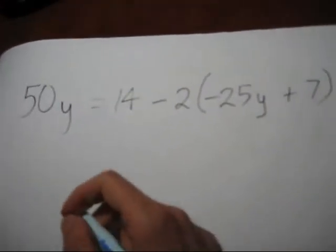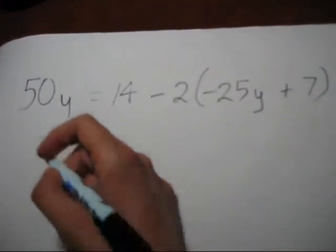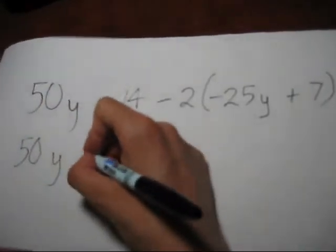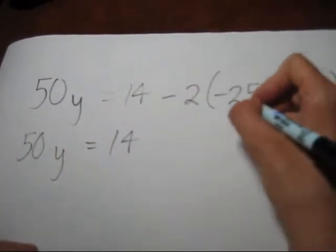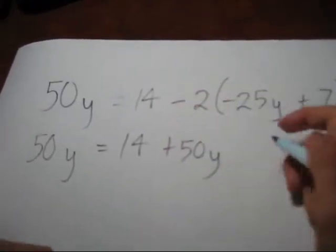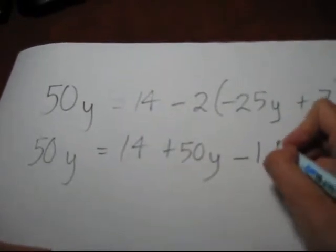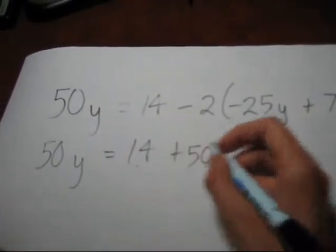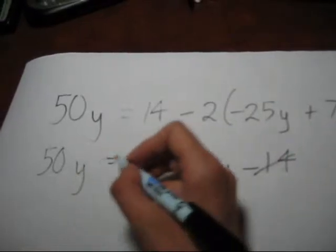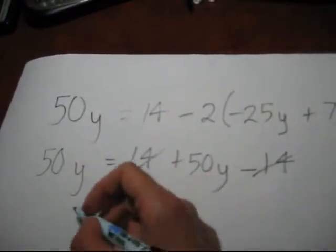Okay, so let's distribute, combine like terms. We're going to have plus 50y. Be sure to distribute that negative, minus 14. Well, 14 minus 14, that's gone, it's 0. We get 50y equals 50y.